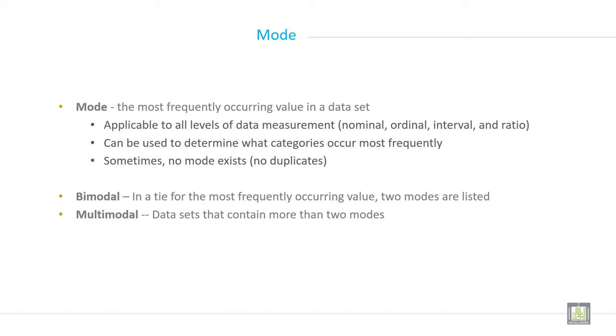Mode is the most frequently occurring value in a data set. Most frequently, most repeated. Frequently means repeated. Most repeated number in any data set.